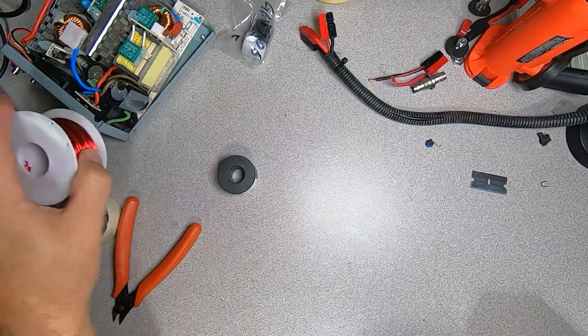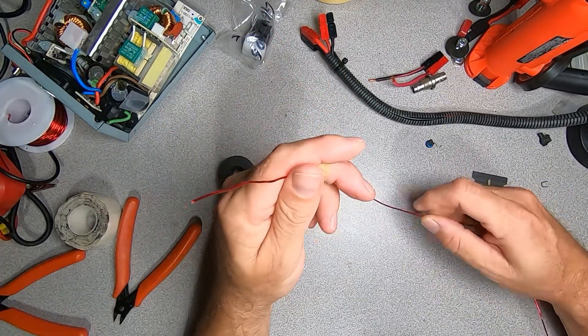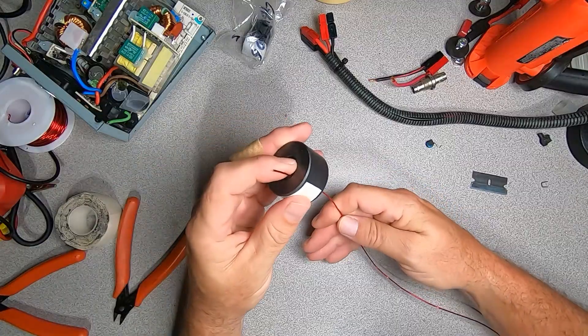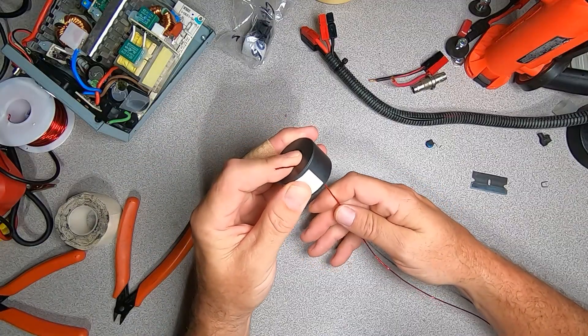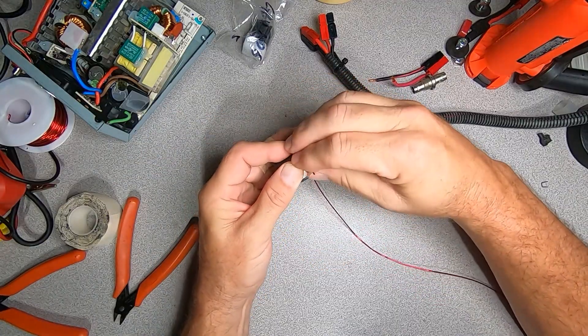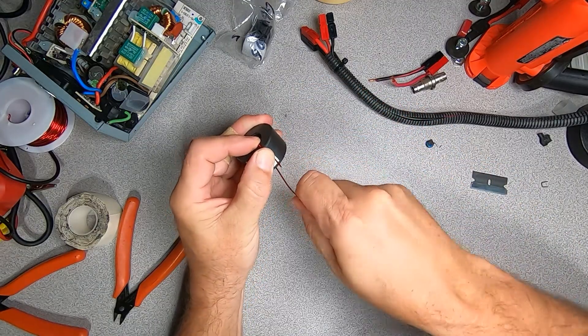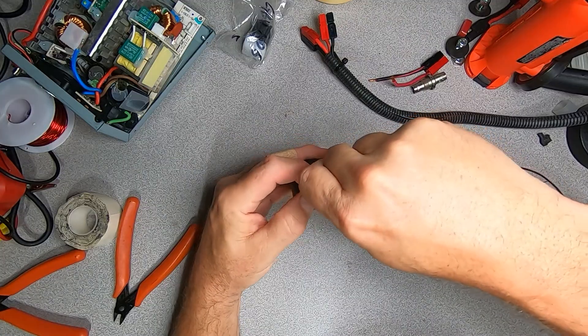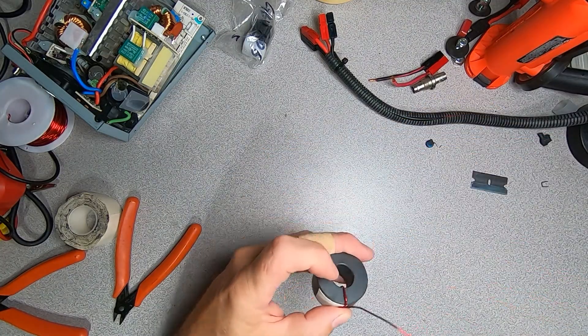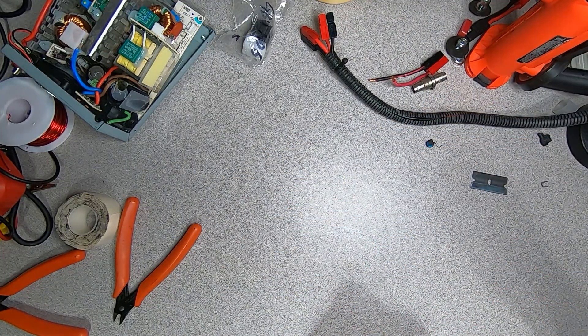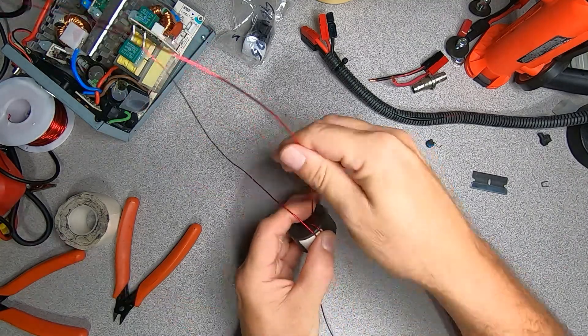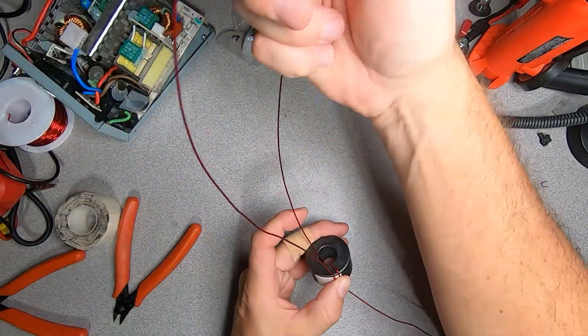Just like that. Place that on your ferrite. Get yourself some 18 gauge enamel magnet wire. Cut yourself 40 inches of it. Start your first turn.